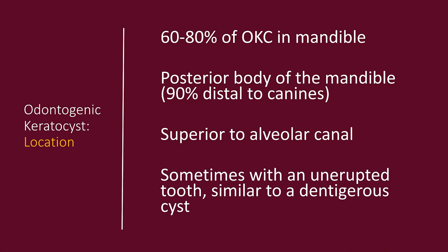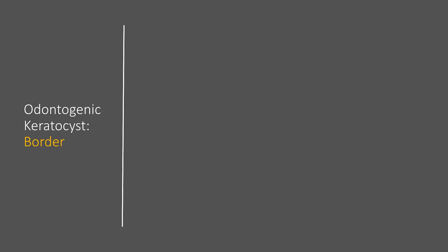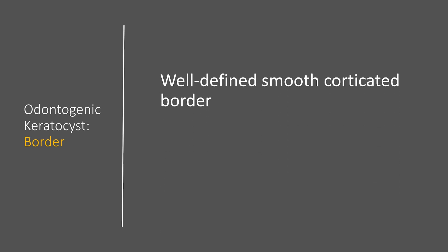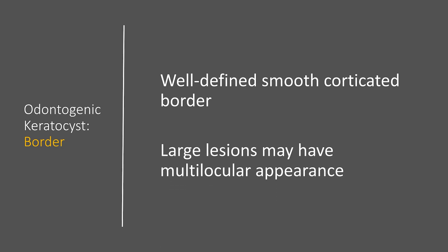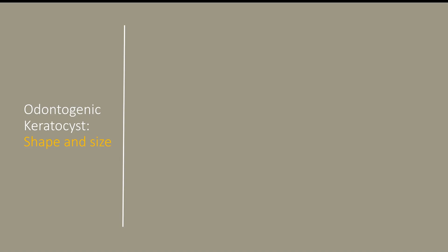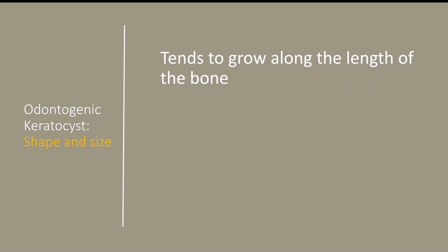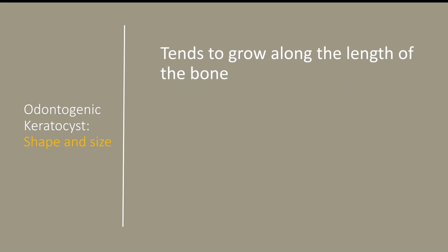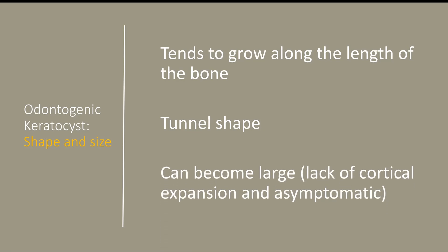Sometimes these are associated with an unerupted tooth and may look like a dentigerous cyst. The border of the odontogenic keratocyst is often well-defined, smooth, and corticated. Large lesions may have a multilocular appearance. The shape can be circular, but it tends to grow along the length of the bone — this is what we saw in our case. This lesion was rather elongated than a hydraulic circular shape. Often we see the tunnel shape, and it did not expand the cortical plates, so it can become fairly large. The lack of cortical expansion and the asymptomatic nature may allow this lesion to grow for quite some time before it is detected.